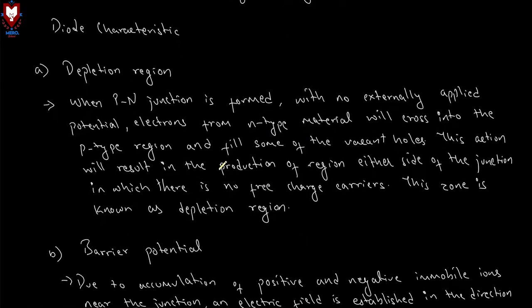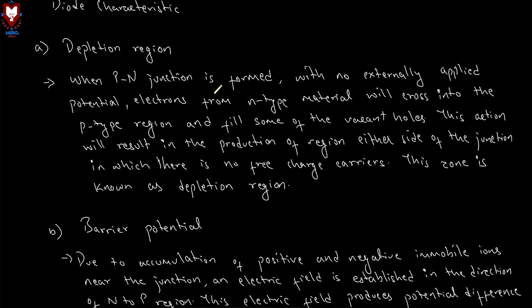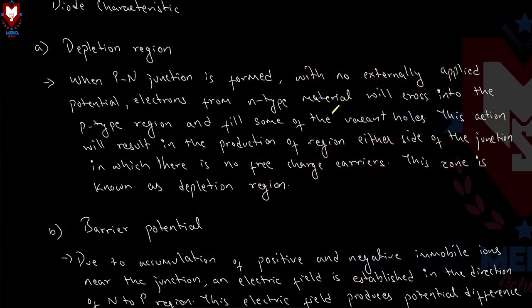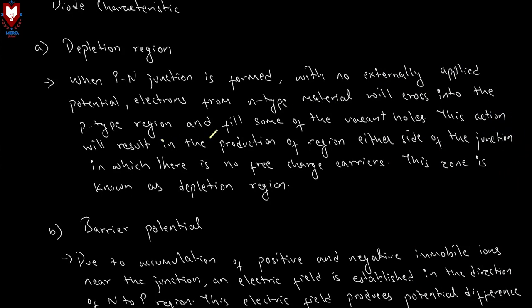Diode characteristic: the depletion region. When a P-N junction is formed with no externally applied potential, electrons from the N-type material will cross into the P-type region and fill some of the holes. These actions result in the production of a region on either side of the junction in which there is no free charge carrier. This zone is known as the depletion region.